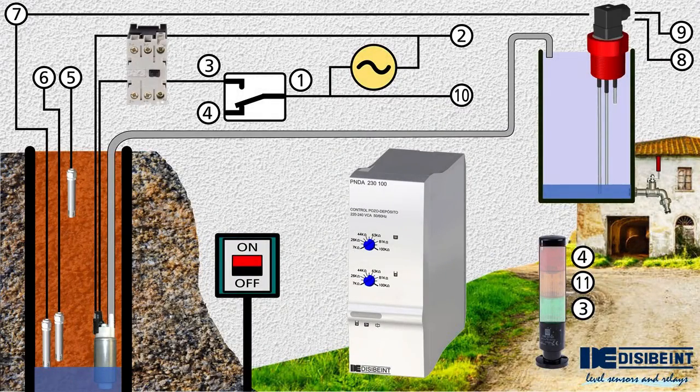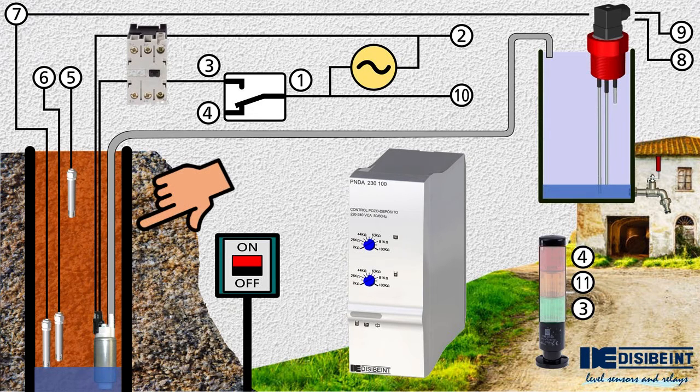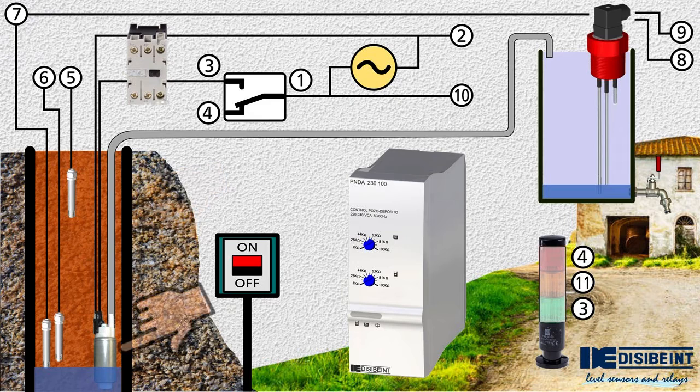In this scenario we simulate an automation for the automatic control of the filling and emptying of a tank which is supplied with water from a nearby well. It is a natural well which is fed by groundwater and we do not know how often it is filled. We have a submerged pump that will extract the water and send it to the tank.